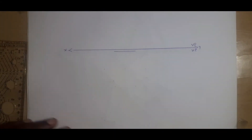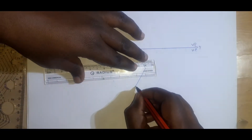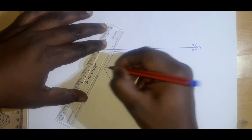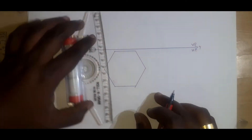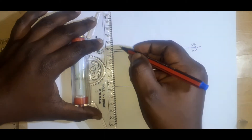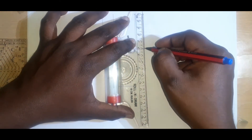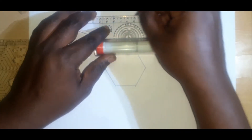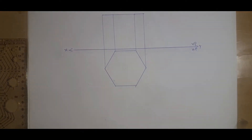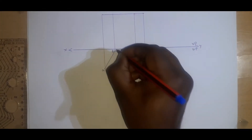I will fix my hexagonal prism here. The axis height is fixed as 50mm. We draw the prism and finish it. I can give the names — the bottom face will be A, B, C, D, E, F.